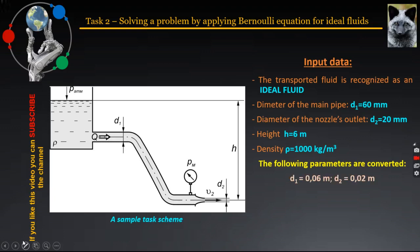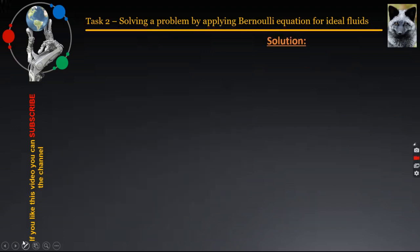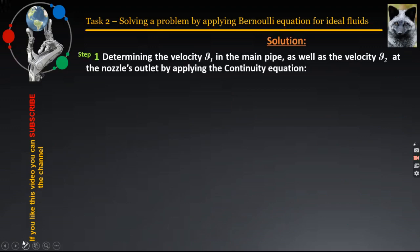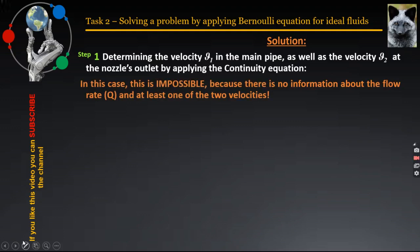The task requires two parameters to be determined: the flow rate of the transported water flow, and the manometric pressure PM measured at the joint point where the manometer is installed. The first step, according to the proposed methodology, is to establish a relationship between velocity and flow rate by applying the equation of continuity. However, in this case this is impossible, because there is no information about the flow rate Q and at least one of the two velocities. This is the so-called reverse type task, which requires step 1 to become the last step.